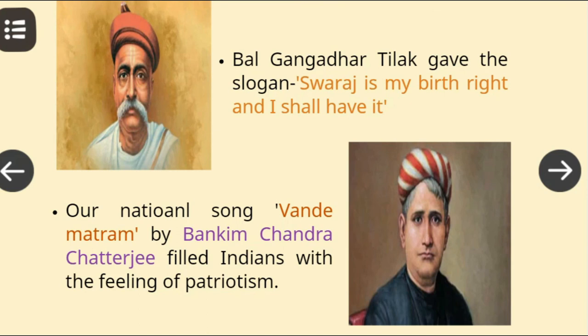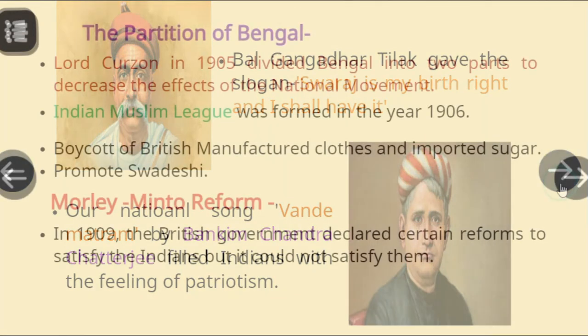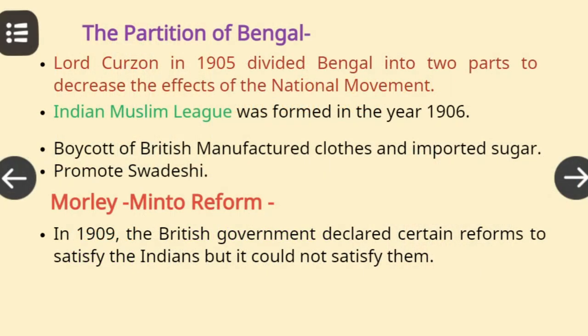Baal Gangadhar Tilak gave the slogan, 'Swaraj is my birthright and I shall have it.' Our national song, Vande Matram by Bankim Chandra Chatterjee, filled Indians with the feelings of patriotism. The Partition of Bengal — Lord Curzon in 1905 divided Bengal into two parts to decrease the effects of the national movement, but the reality was that he wanted to divide Hindus and Muslims. Indian Muslim League was formed in the year 1906. The Indians planned two programs in opposition to the partition of Bengal: first was boycott of British manufactured clothes and imported sugar, and second was to promote Swadeshi.